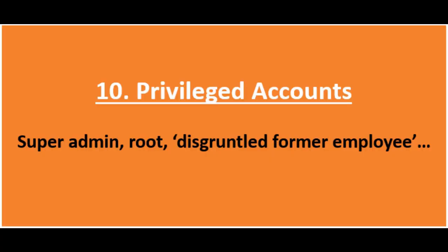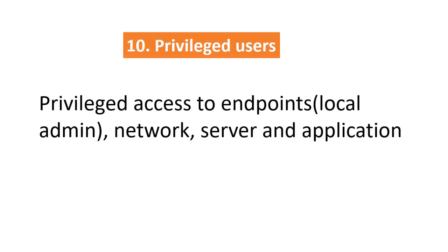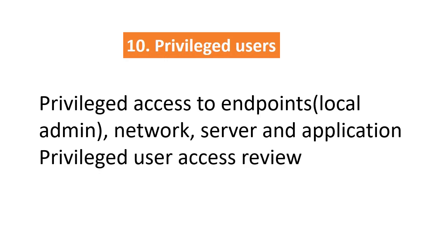Finally, the most important point in identity and access management is how privileged user access is managed. Make sure that creating privileged accounts like root-equivalent or super admin, or granting these privileges to regular users, is followed as per business requirements and upon approval. Similarly, revoking privilege access rights or deleting privileged users from the system must be performed within the turnaround time defined in the policy. Check if the privileged access review process is defined and implemented to ensure all privileged access rights are reviewed on critical systems like databases, applications, network, and endpoints.